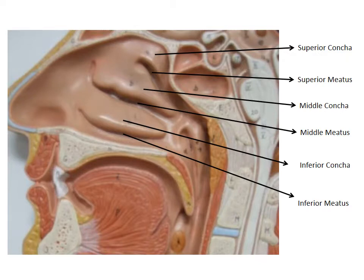This is simply a close-up picture of the structures. You can see the superior nasal concha with its superior nasal meatus, the middle nasal concha with the middle nasal meatus as the little ridge underneath it, and the inferior nasal concha with its inferior nasal meatus.